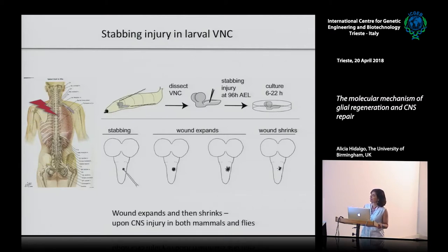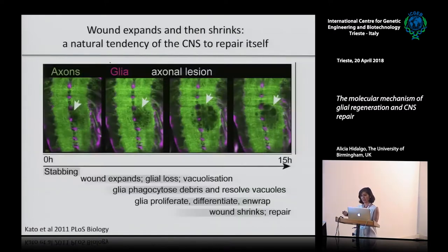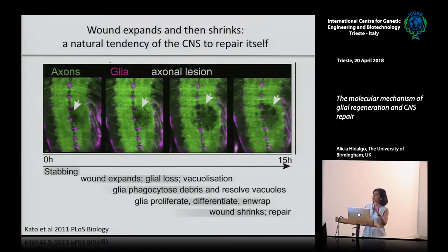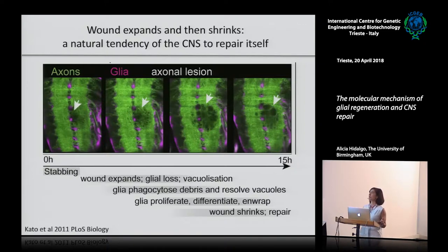Then just culture the nerve cord for as long as you need, depending on the question. What he found was that the stabbing lesion first expands and then shrinks. When I saw this I couldn't believe it because I think it's amazing. The axons are labeled with GFP - you have an injury, you see black. And then the injury first expands and then it starts shrinking. If it shrinks, it means there is a repair response in the nervous system of the fly. And if it is there in the fly, we can get at the genes.